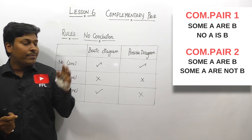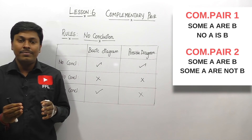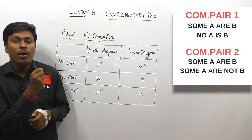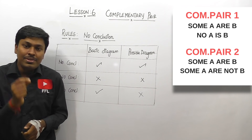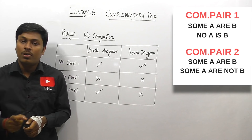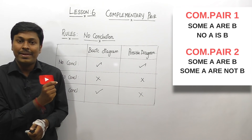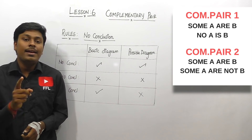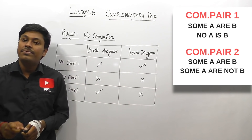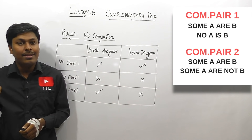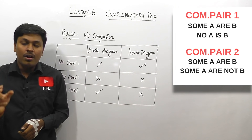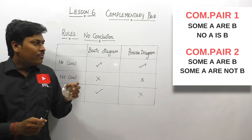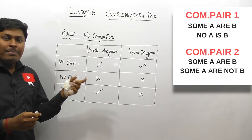Usually in 2014 and 2015, if we found a complementary pair in the conclusion we would directly go for the option 'either or'. But nowadays, if you find a complementary pair, you need to check whether it satisfies the rule or not. If it does not satisfy the rule, even though it is a complementary pair, you should not go for 'either or'. Only if it satisfies the rule should you go with 'either one or two follows'.